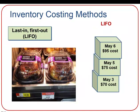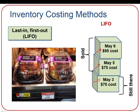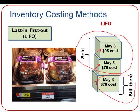LIFO is another inventory costing method where we assume the last ones in are the first ones out. When you go to Walmart to buy rotisserie chicken, you typically find the freshest one with the most recent cook date — that's the principle behind LIFO. Using the same three items, under LIFO we assume the last ones in — May 6th and May 5th — are the ones sold, and the oldest unit from May 3rd remains.